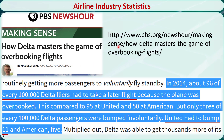According to a news article in PBS NewsHour, among the three major US carriers — Delta, American, and United — Delta has the highest rate of voluntarily bumped passengers at 96 per 100,000 passengers, while United has the highest rate of involuntarily bumped passengers at 11 per 100,000 passengers.